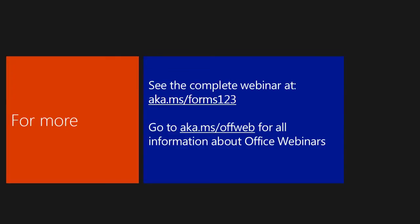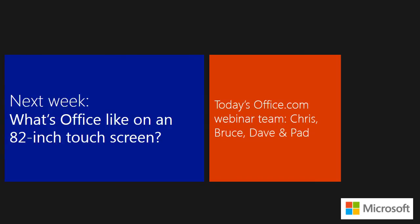You can get detailed instructions about working with forms and the Developer tab at aka.ms/forms123. The home page for the Office webinar series is at aka.ms/offweb, where you can find information about the series. Next week we have a special one — we're going to show you what Office is like on an 82-inch touch screen called Perceptive Pixel, which a lot of businesses are starting to use instead of plain whiteboards. Thank you for joining this Office 15-minute webinar.